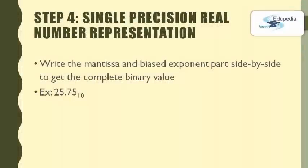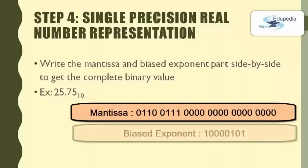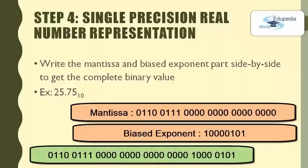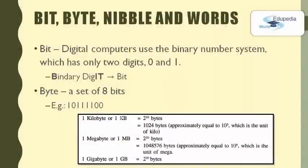Step 4: Write the mantissa and biased exponent part side by side to get the complete binary value. For 25.75, the mantissa part is 0 1100111 followed by four groups of four 0s, and the biased exponent part is 10000101. The complete number in binary is the combination of these. This number is understood by the computer as it consists of only 0s and 1s — no decimal point and no negative sign is present. That is how single precision real number representation works.